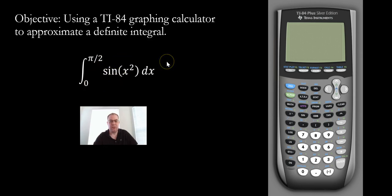So the first thing that you want to do is graph this function. So we're going to go ahead and graph sine of x squared. But before I do that, I want to make sure that we're in radian mode because our bounds are in radians.